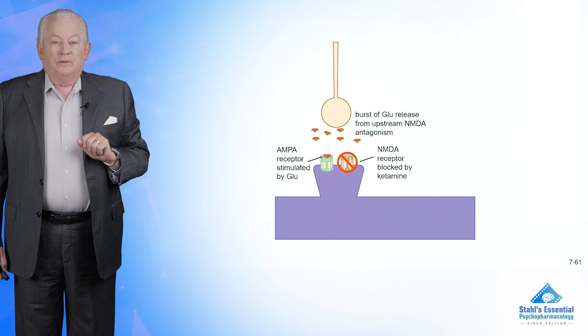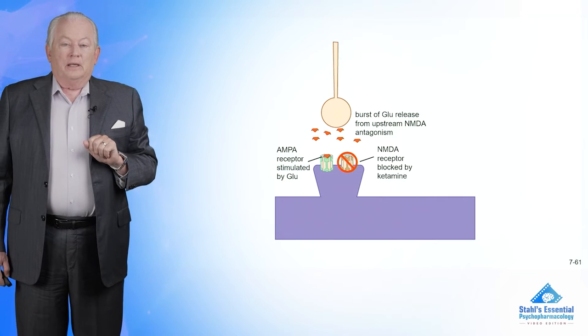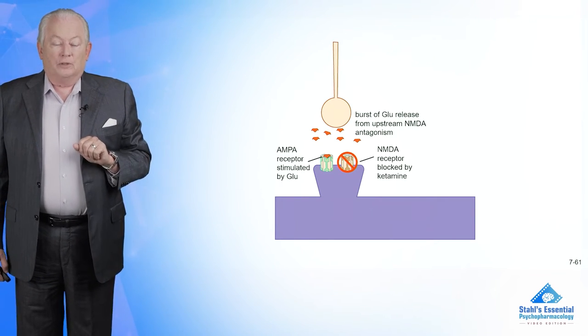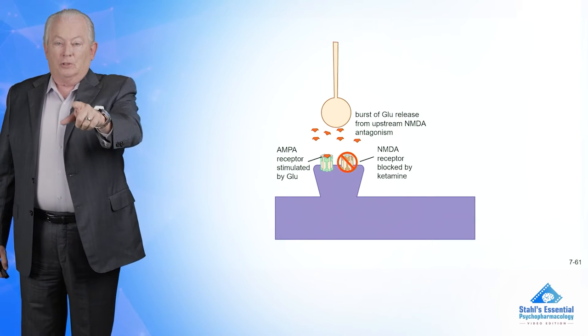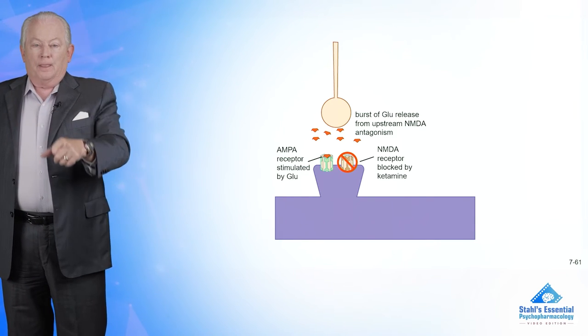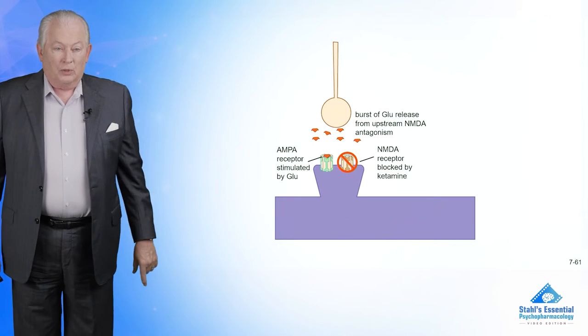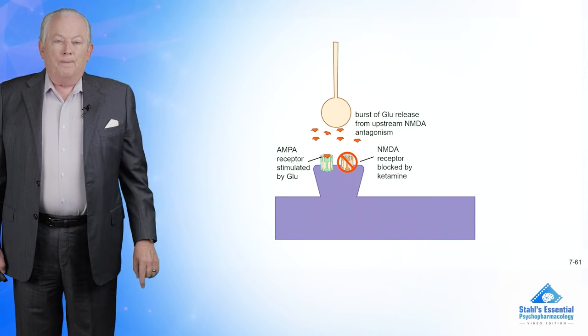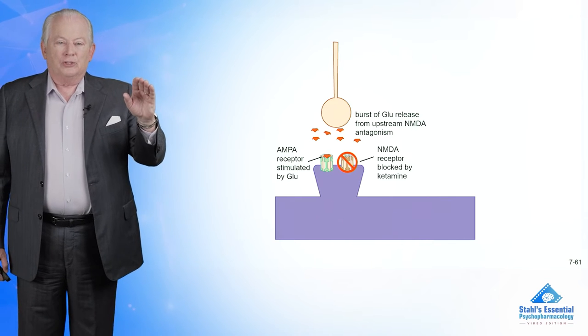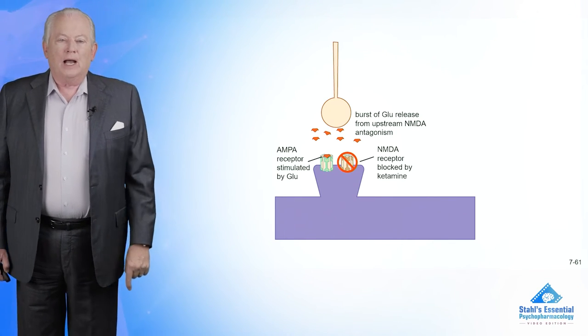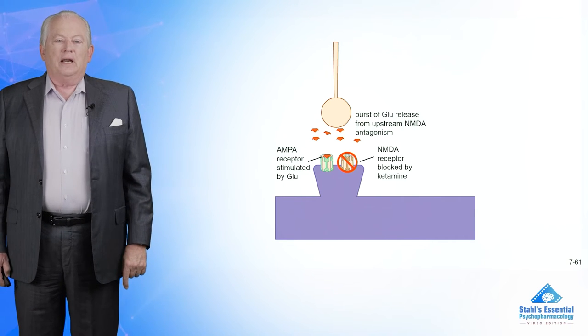Now, when you give an NMDA blocker and cause the burst of glutamate, well, there's going to be ketamine at this synapse, too. And it's not going to allow glutamate to work there, but it sure is going to work at the AMPA receptor. So some people think that you give ketamine so you can stimulate an AMPA receptor. Why?